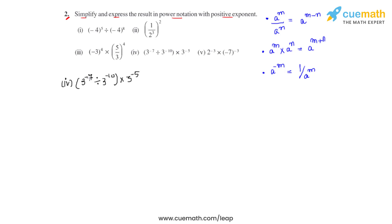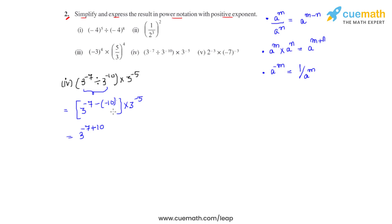In the fourth bit, we have 3 raised to negative 7 divided by 3 raised to negative 10, all multiplied by 3 raised to negative 5. We simplify the division first: the bases are the same and in division, so powers get subtracted — giving us 3 raised to negative 7 minus negative 10, multiplied by 3 raised to negative 5. Since minus of minus becomes positive, this is 3 raised to negative 7 plus 10, which is 3 raised to 3, times 3 raised to negative 5.